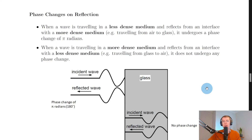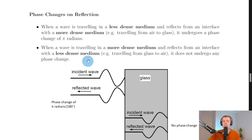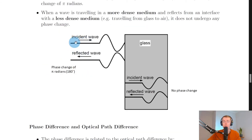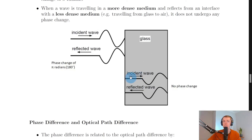The next concept is phase changes on reflection. When a wave travels in a less dense medium and reflects from an interface with a more dense medium — for example, air to glass — it undergoes a phase change of pi radians. When a wave travels in a more dense medium and reflects from a less dense medium — for example, glass to air — it does not undergo any phase change. A wave reflecting from the air-glass boundary is inverted by 180 degrees, whereas a wave reflecting inside glass at the glass-air boundary is unchanged in shape.